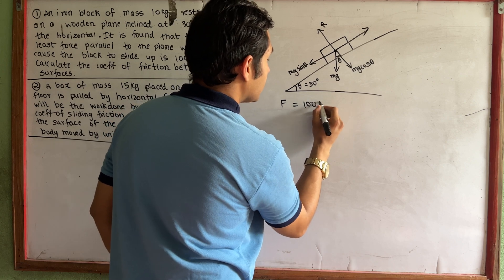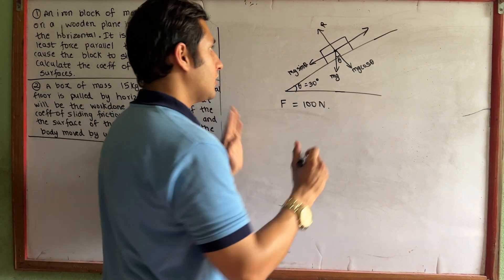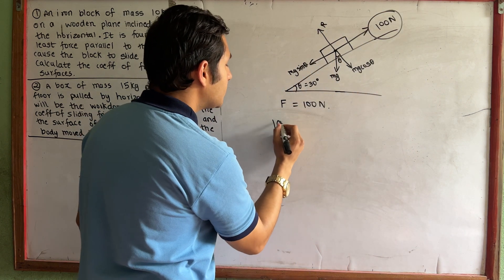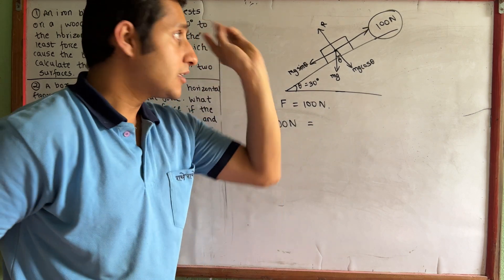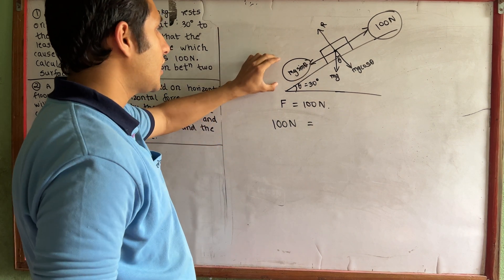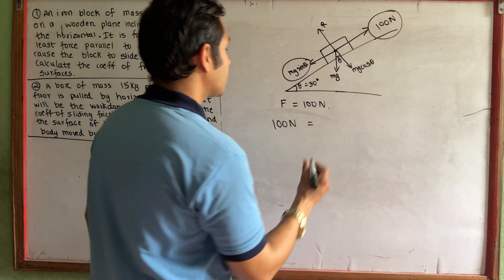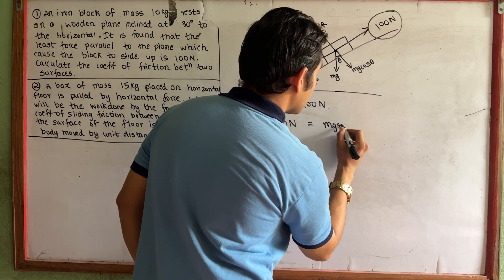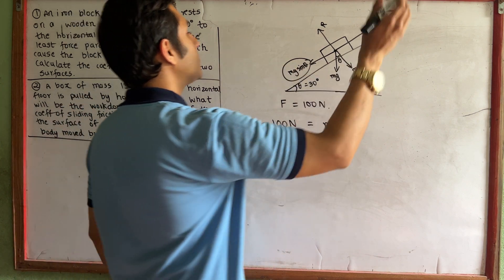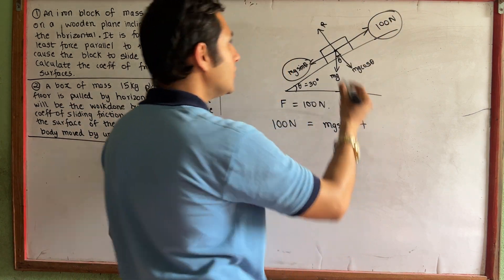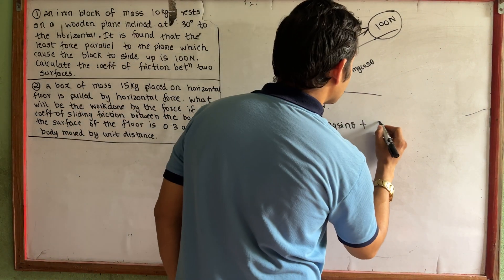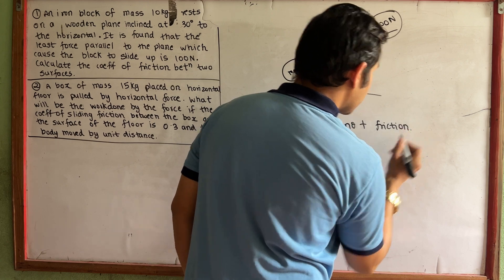The applied force is 100 N. What do we need to do with 100 N? We need to balance the Mg sin theta. We also need to balance the friction. We need to balance Mg sin theta, so the equation is set up.